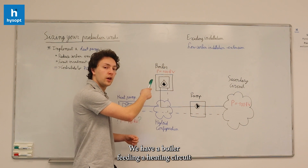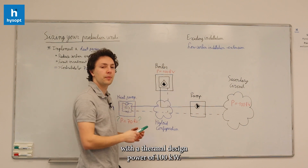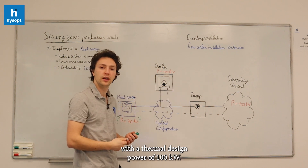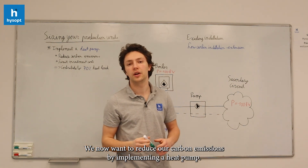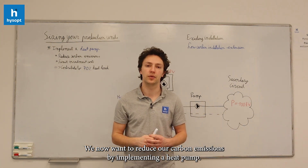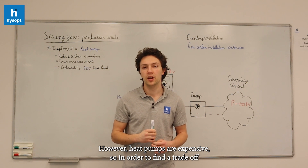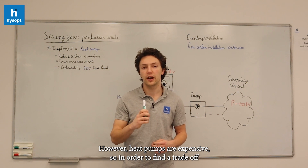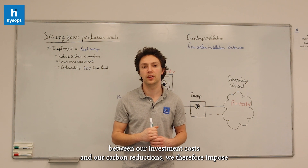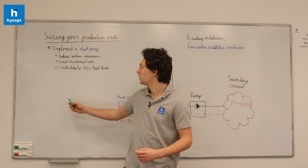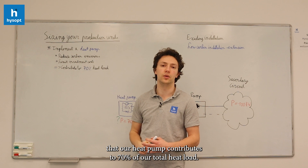We have a boiler which feeds a heating circuit with a thermal design power of 100kW. We now want to reduce our carbon emissions by implementing a heat pump. However, heat pumps are expensive, so in order to find a trade-off between our investment costs and our carbon reductions, we therefore impose our heat pump contributes to 70% of our total heat load.